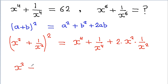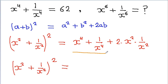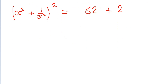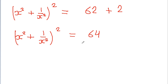So we get (x² + 1/x²)² is equal to x to the power 4 plus 1 by x to the power 4, which is 62. Here x² and 1 by x² cancel, giving us 2. So (x² + 1/x²)² equals 62 plus 2, which is 64.